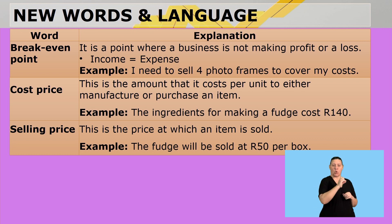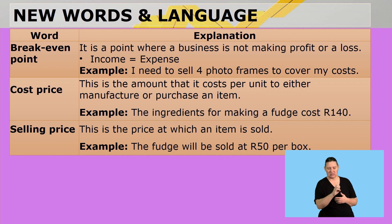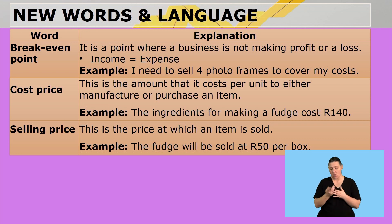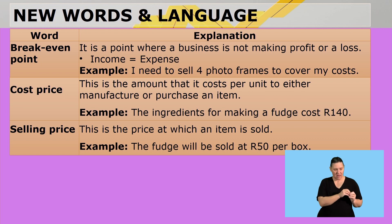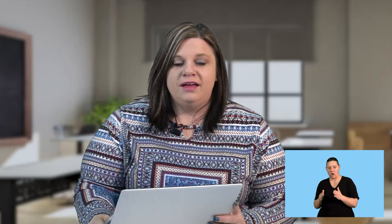For example, the ingredients for making fudge cost 140 Rand. Selling price is the price at which an item is sold. For example, the fudge will be sold at 50 Rand per box. That brings us to the end of the first segment — quickly go and get your calculators, we will be back just now.